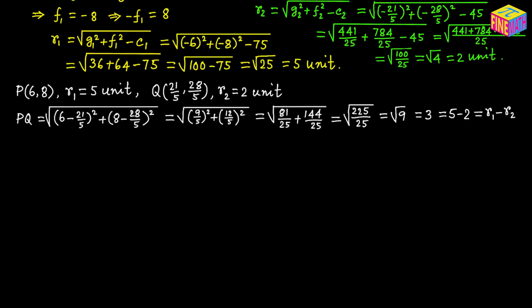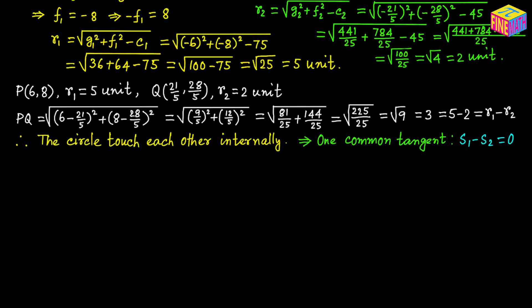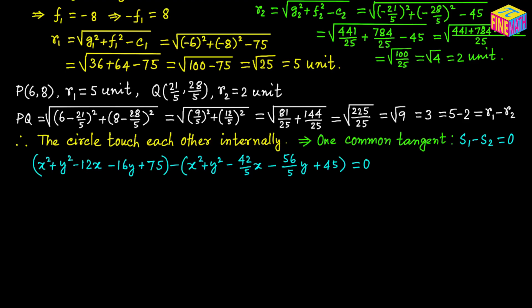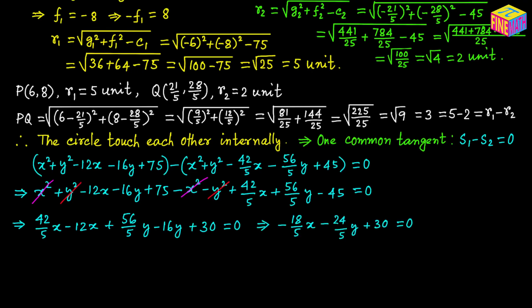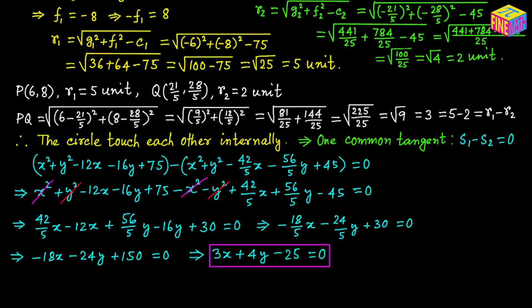Now that we know the circles touch internally, let's find the equation of the common tangent using S sub 1 minus S sub 2 equals 0 — that's the easiest method. We write S sub 1 minus S sub 2 equals 0, and removing the parentheses on the left-hand side, the X squared terms cancel out and so do the Y squared terms. After simplifying and multiplying both sides by positive 5 then dividing by negative 6, our equation becomes 3x plus 4y minus 25 equals 0. That is the equation of the common tangent for these two circles.